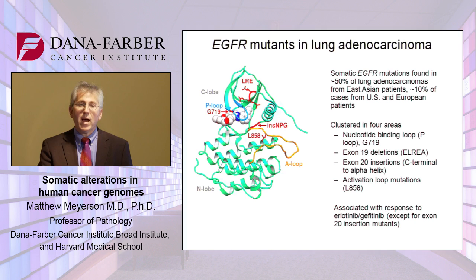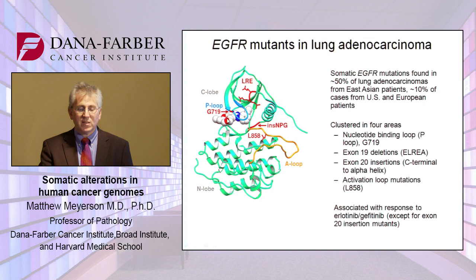Why is there this difference? I think we still don't understand. Is it a genetic difference? Is it an environmental difference? Is it some of both? The mutations are clustered in four areas, all around the nucleotide binding site, and shown here in the structure is erlotinib bound to the kinase domain of EGFR, where ATP binds in the same site.